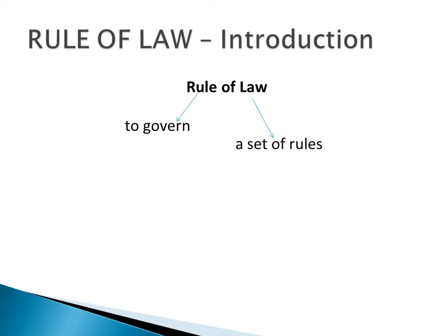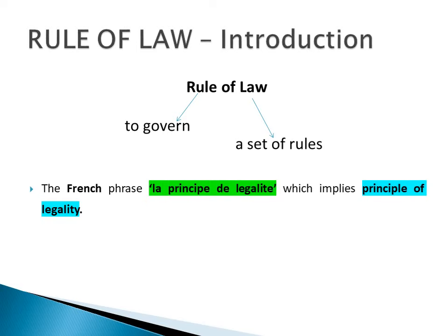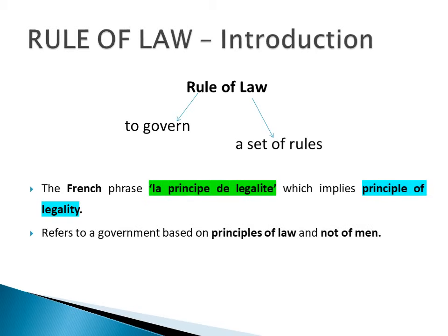The derivation of the phrase 'rule of law' is from the French phrase 'la principe di legalite,' which implies the principle of legality. By this phrase it refers to a government based on principles of law and not of men. As per rule of law, people should be governed by accepted rules rather than decisions arbitrarily taken by rulers, and no person should be subjected to harsh or arbitrary treatment.